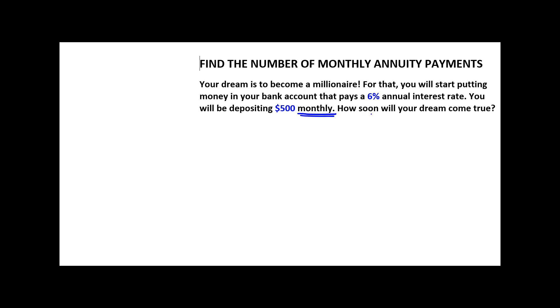Now, what do we need to find? How soon will your dream come true? In other words, how soon will you become a millionaire? This means we need to solve for the number of deposits that will need to be made. What do we need to know in order to find the number of deposits? Because we are dealing with an annuity, what must be known is either the present value or the future value of this annuity.